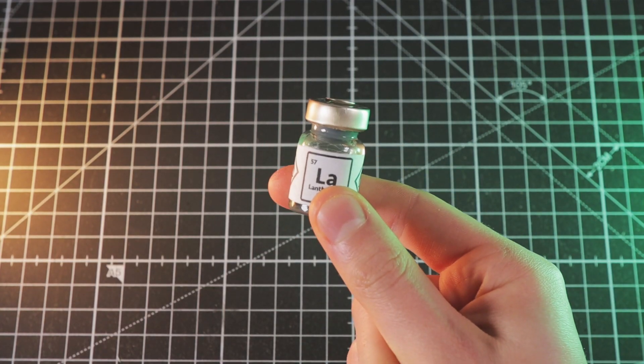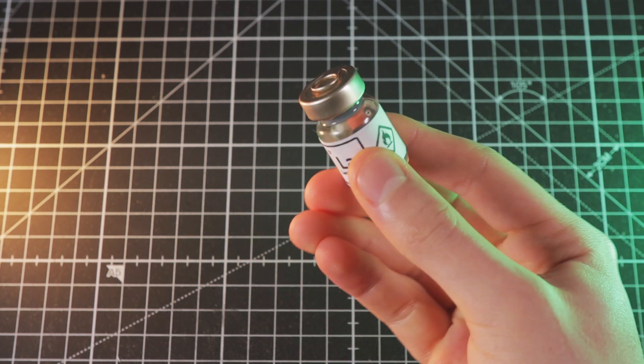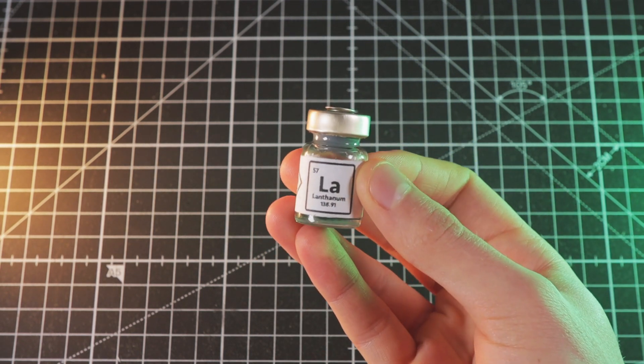Lanthanum is a rare earth element, and it is the first element in the lanthanide series. It has an atomic number of 57.